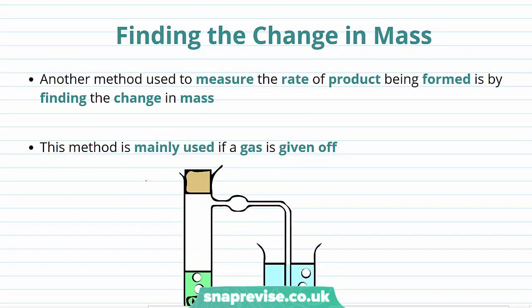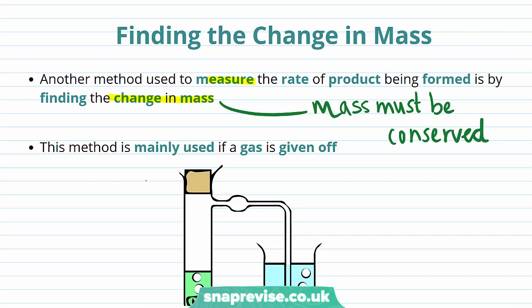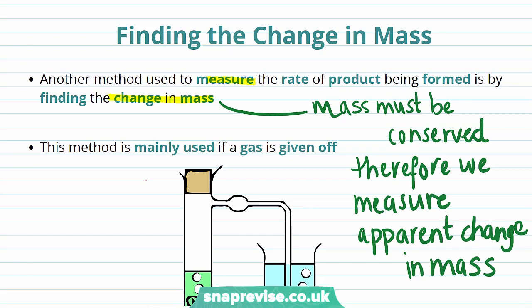An improved method for measuring the rate of product being formed is to find the change in mass. From the conservation of mass, we know that mass must actually be conserved during a reaction. So what we're measuring in a change of mass experiment is actually an apparent change in mass. This occurs in reactions where a gas is given off.